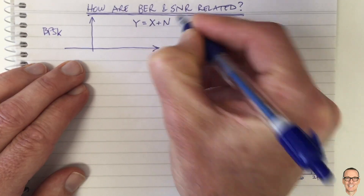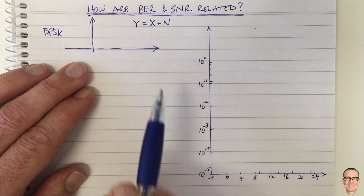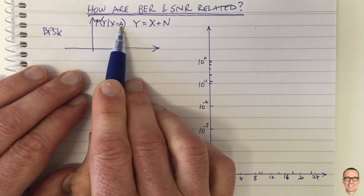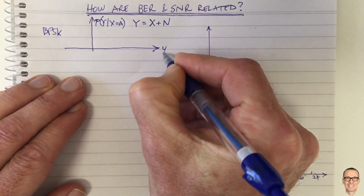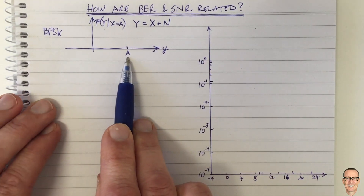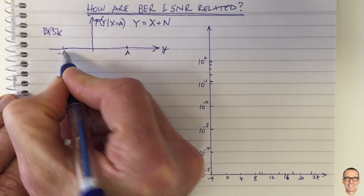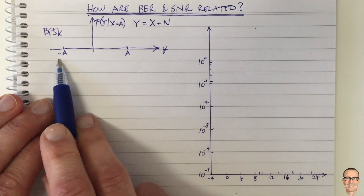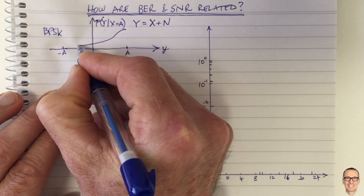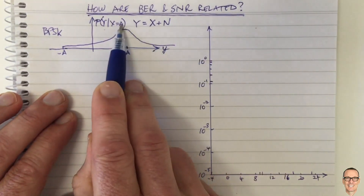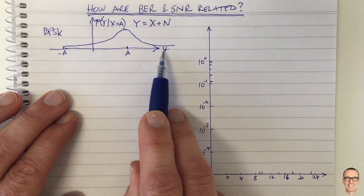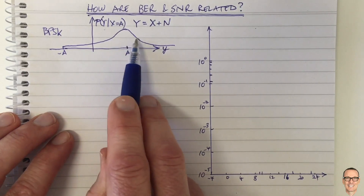Let's say we have X sent and it's received in Gaussian noise — this is Y. We'll draw the conditional probability of Y given that X equals A. We've sent a positive A, and the received density function is a Gaussian shape centered over A. So if we send a plus one, we send a waveform with amplitude A, and the receiver is going to receive at Y a random number because of the Gaussian noise.